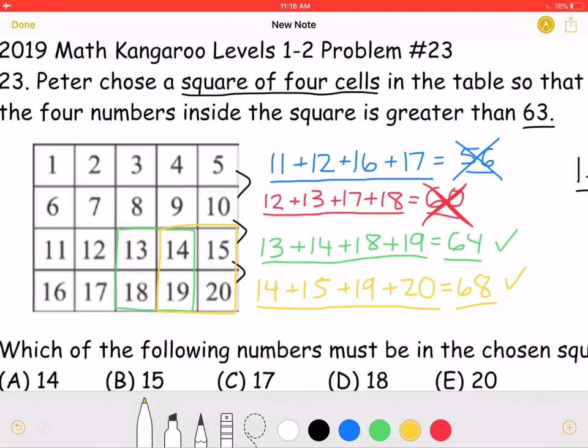So, these are two squares that work. Now, let's look at what numbers they have in common. As we can see, they have 14 and 19 in common.